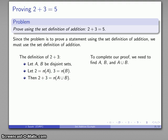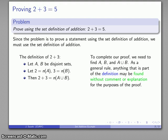Now to complete our proof we need to find sets A and B and then A union B. So here's a useful guideline. As a general rule, anything that is part of the definition we can find without really having to give comment or explanation for the purposes of our proof.